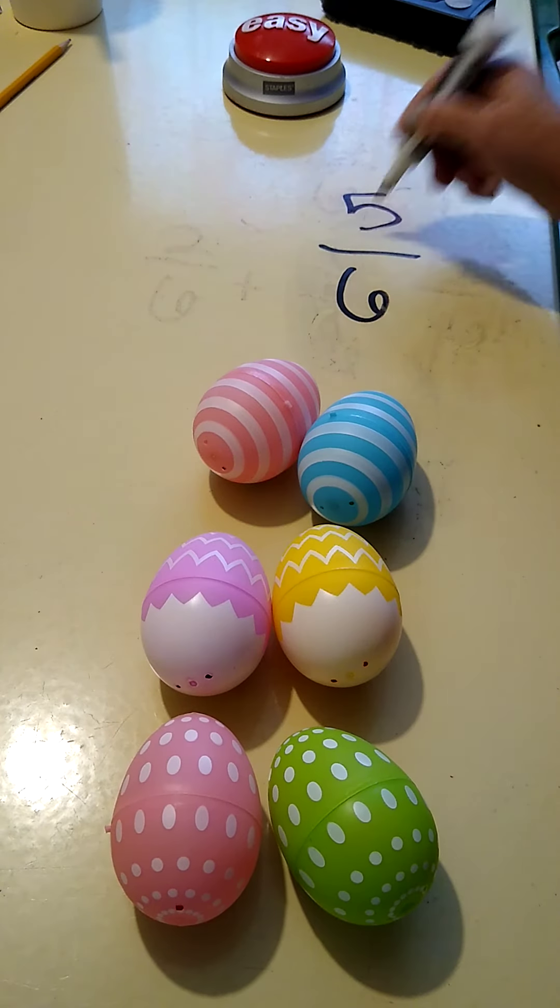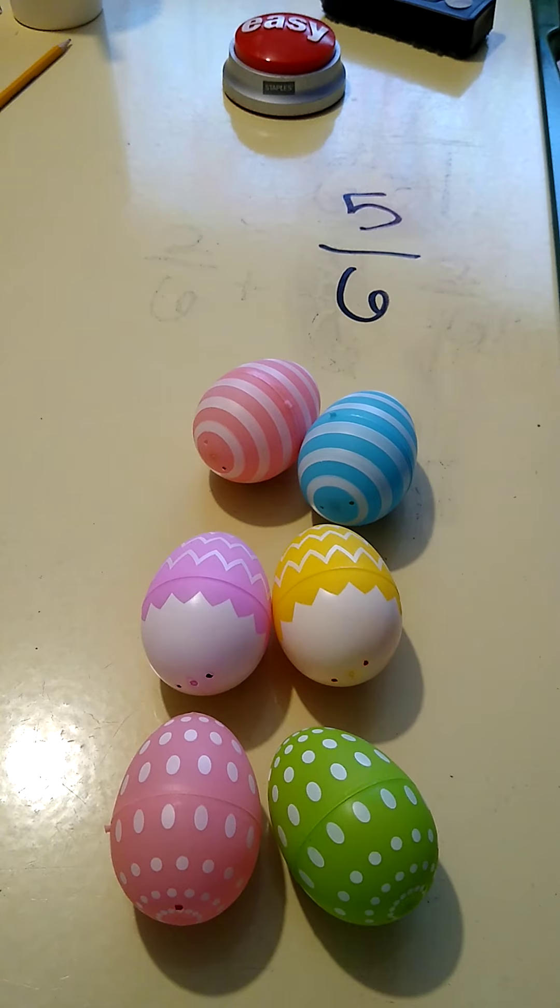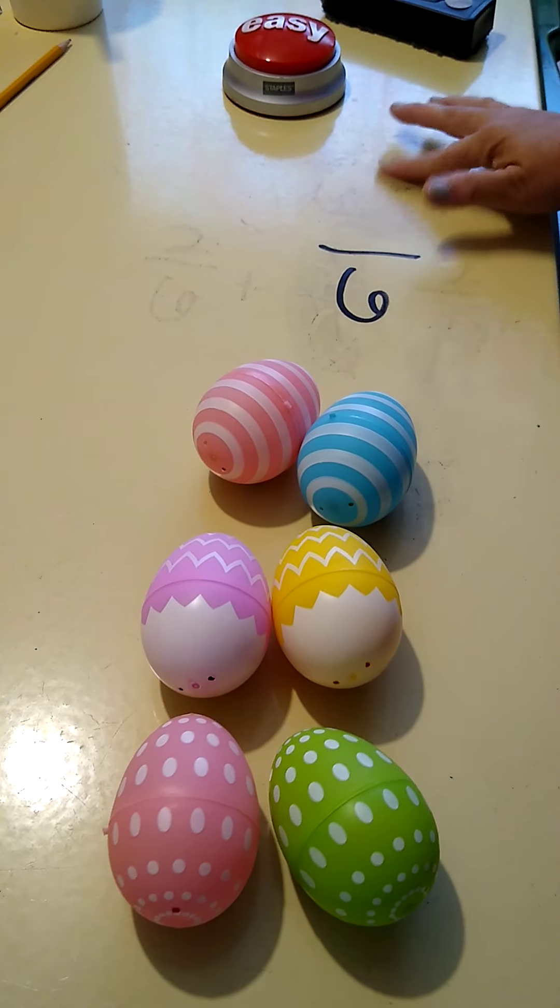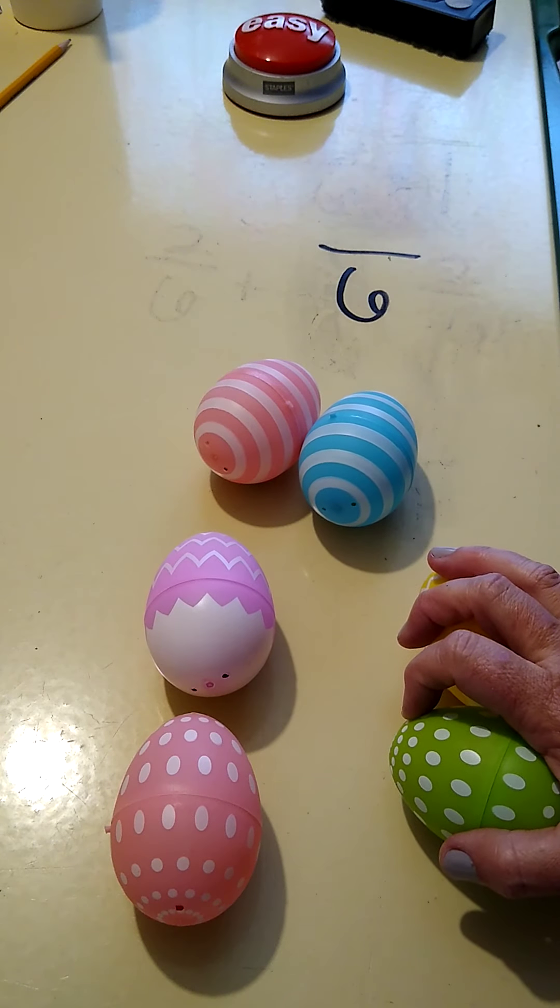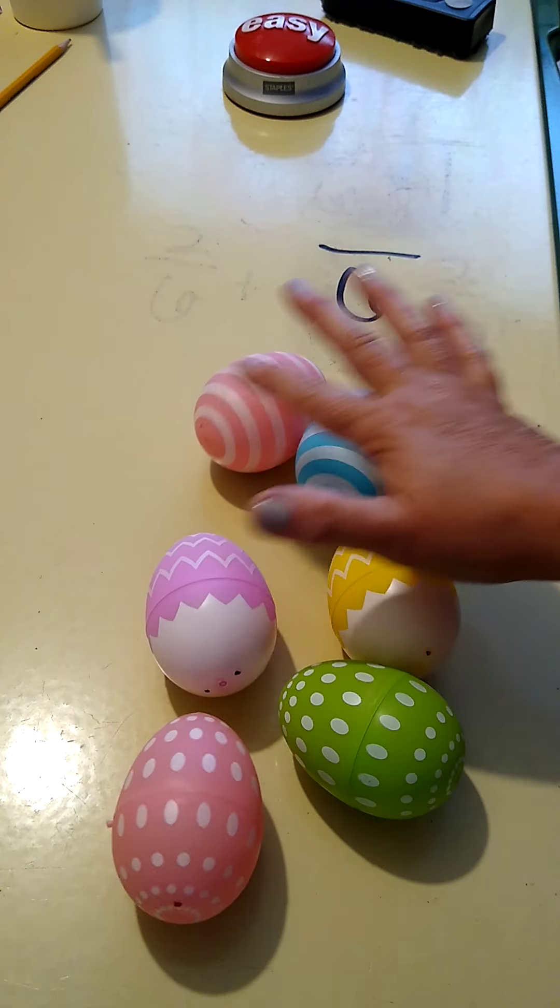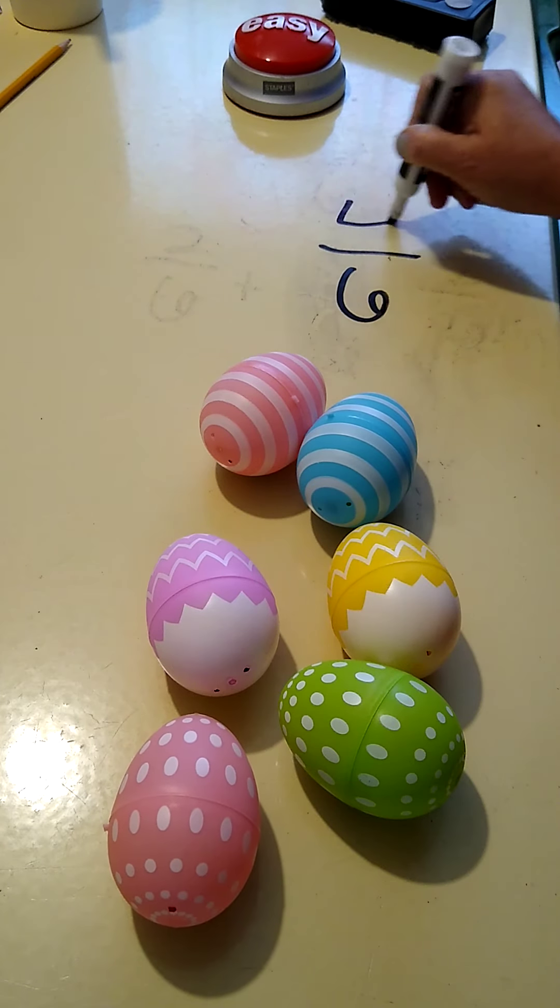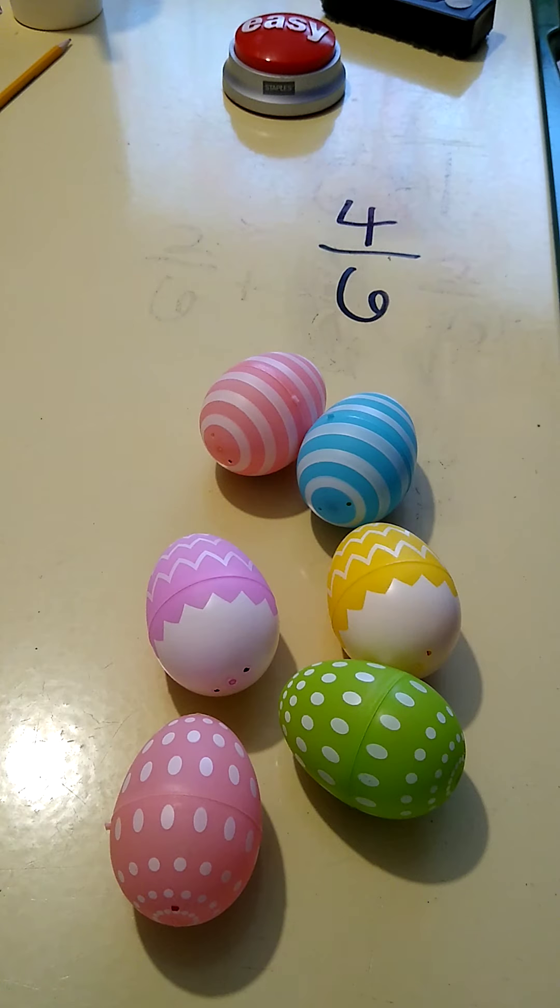Or green - so yellow or green. Which ones are not yellow or green? One, two, three, four. Four-sixths of these are not yellow or green. Excellent.